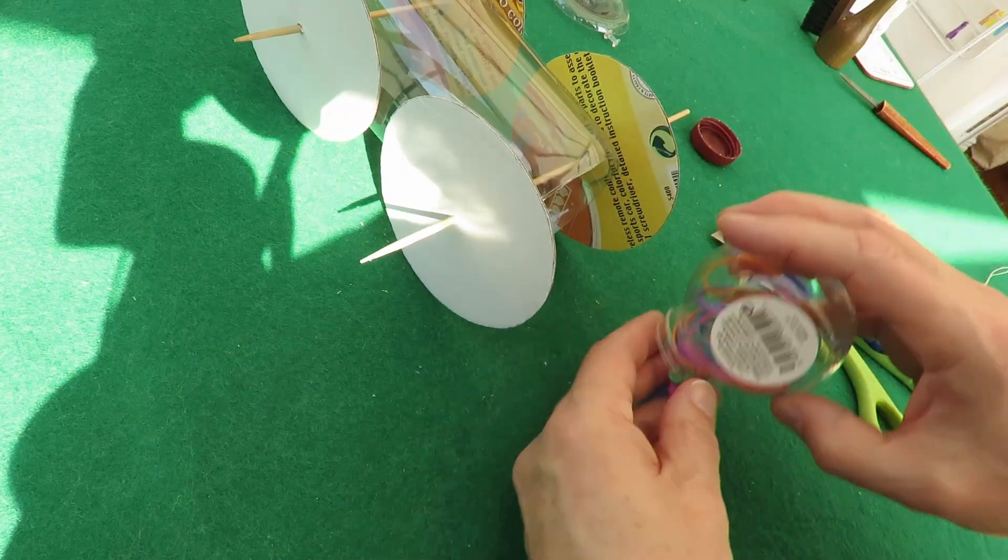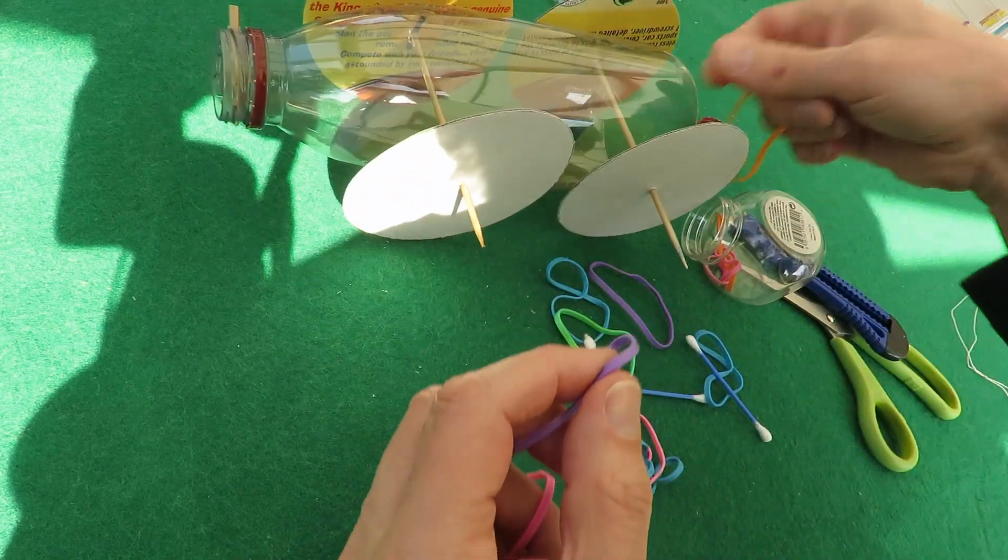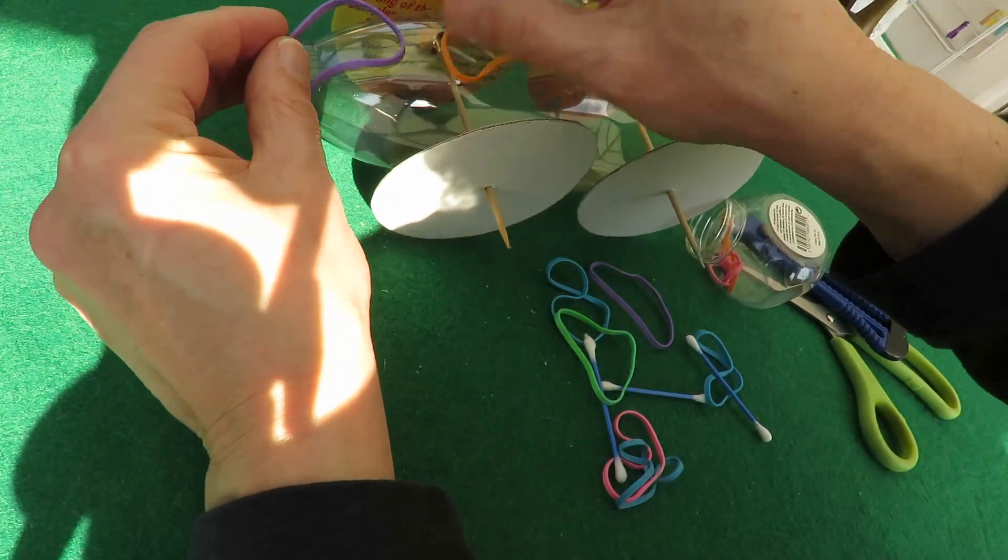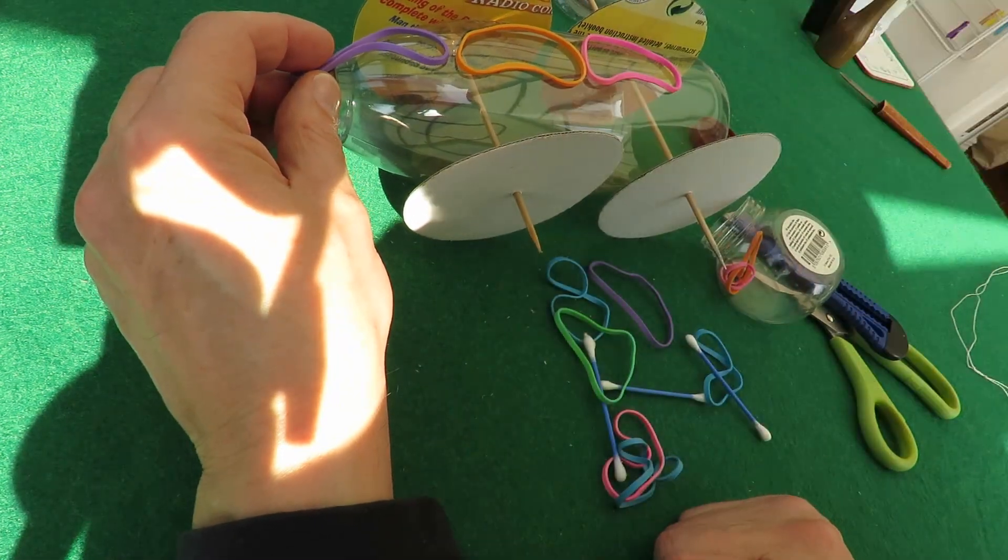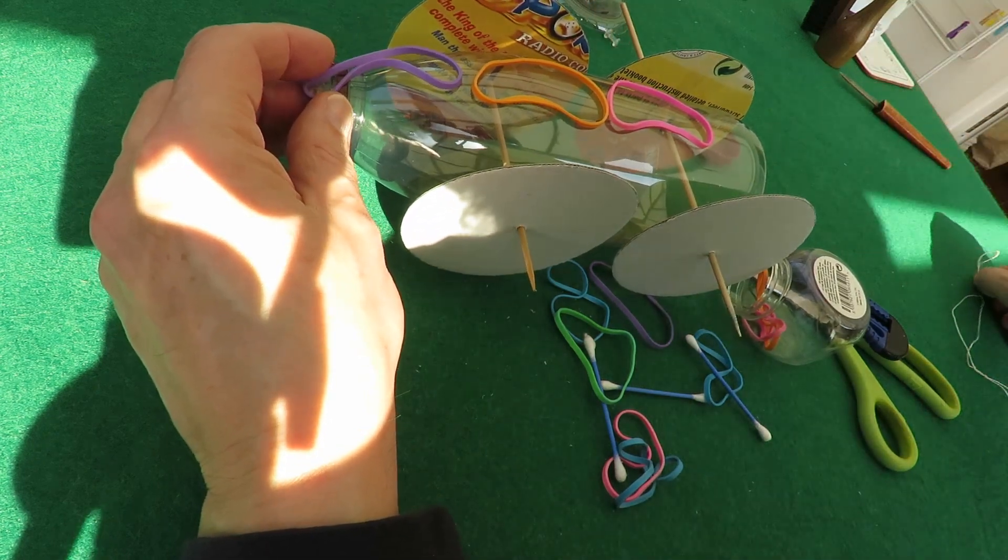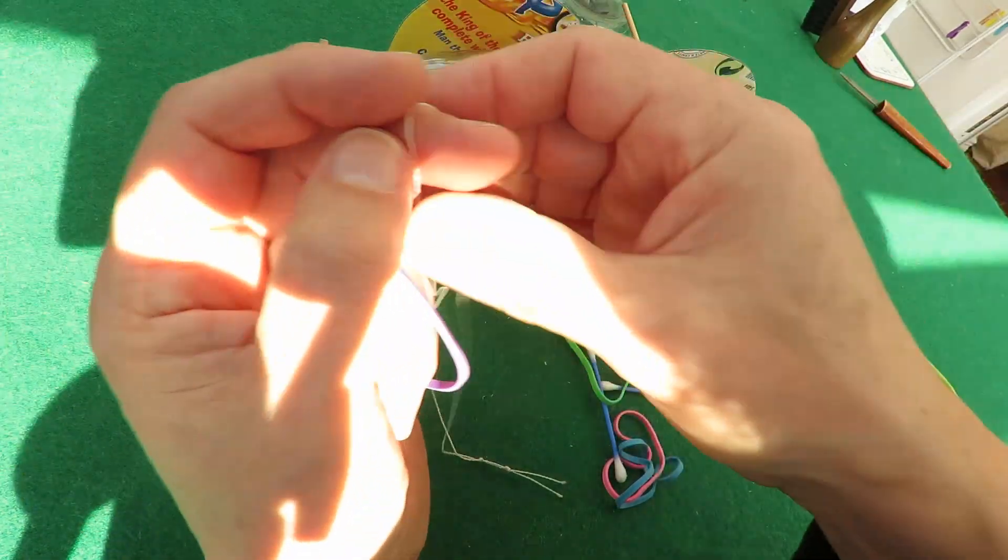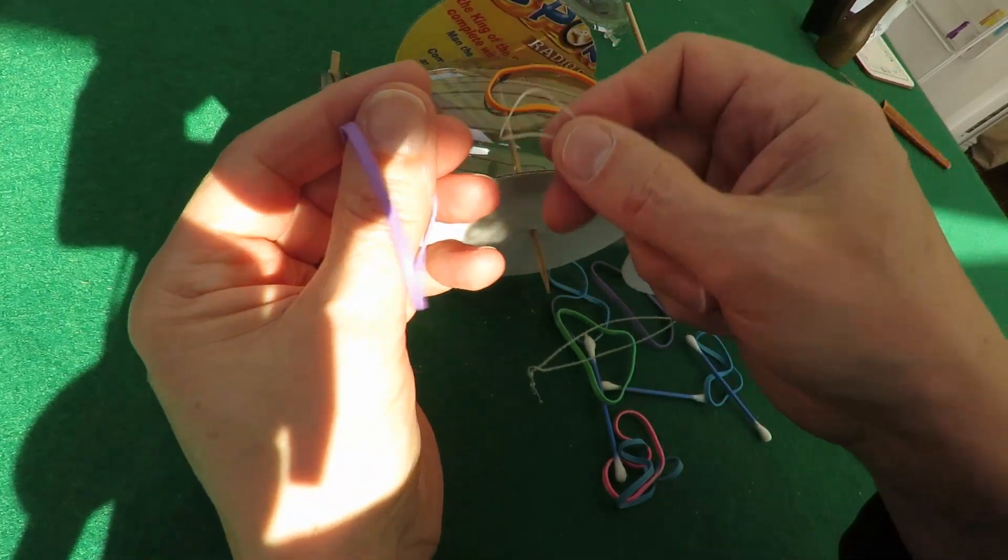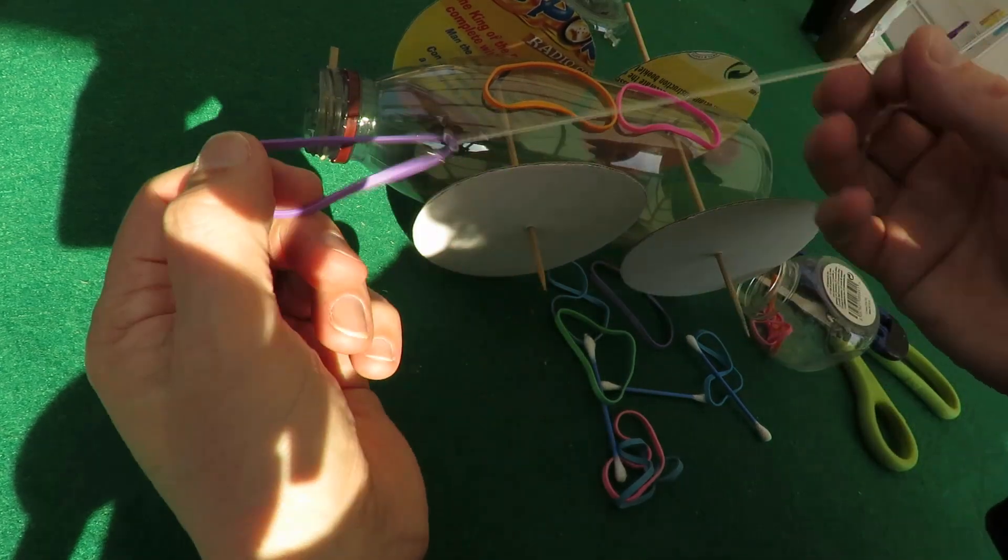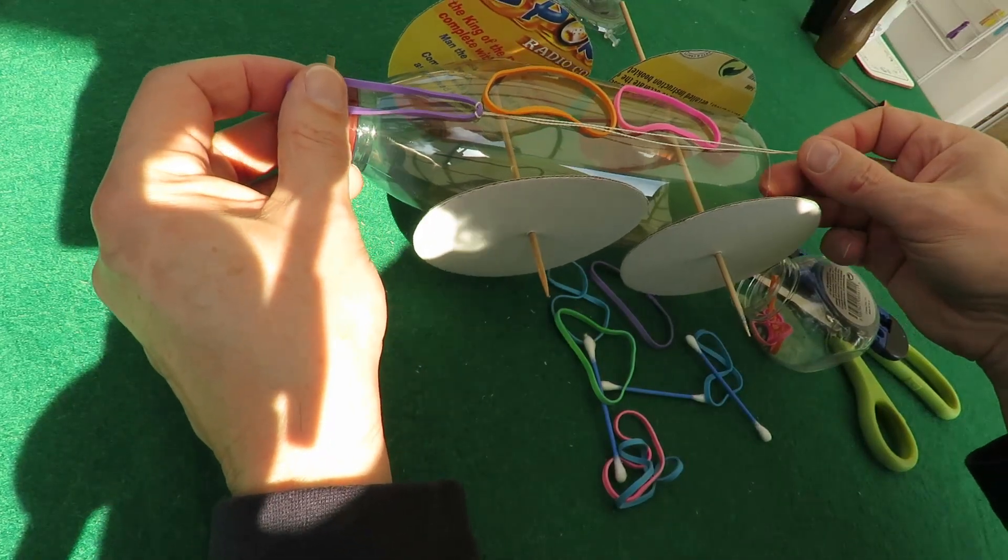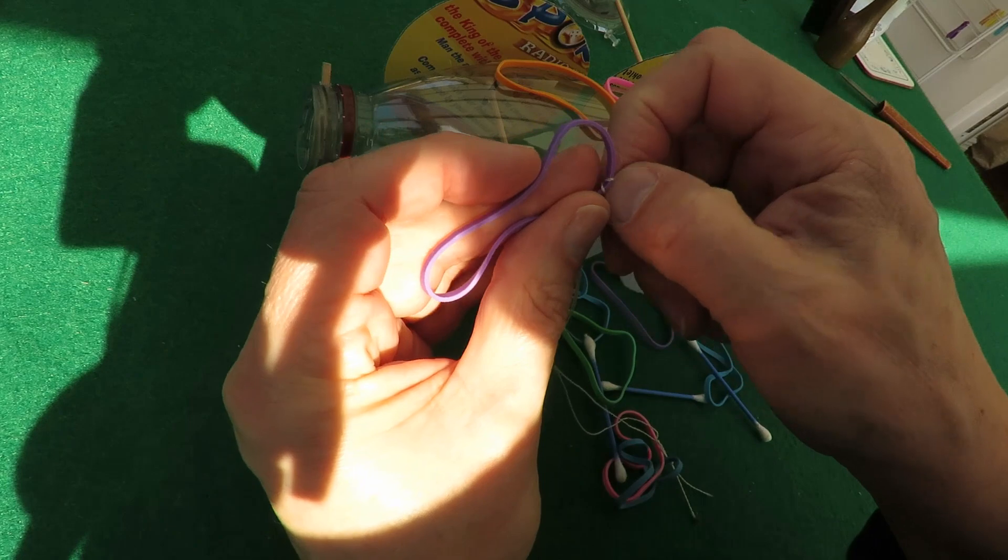Now rubber bands. We need enough to go from the front to the back. Three of these will probably be enough. If you haven't got enough you can probably do this with a piece of string, tie it in a loop, and then you put that through the loop of the rubber band, through itself and pull it tight, and that will extend the reach for you if you've only got one rubber band. But we'll try it with all rubber bands first.